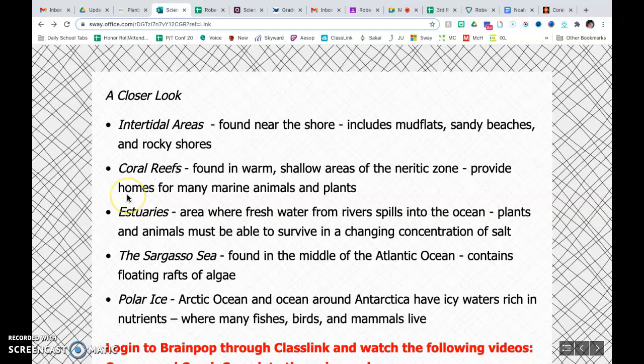Coral reefs. These are found in warm, shallow areas of the neretic zone. They provide homes for many marine animals and plants. Estuary. That's a cool word. This is an area where fresh water from rivers actually spills out into the ocean. The plants and animals must be able to survive in this constantly changing concentration of salt. So they're specially developed to do that.